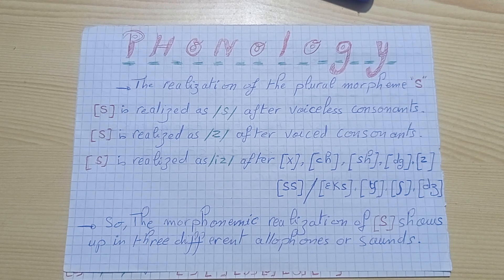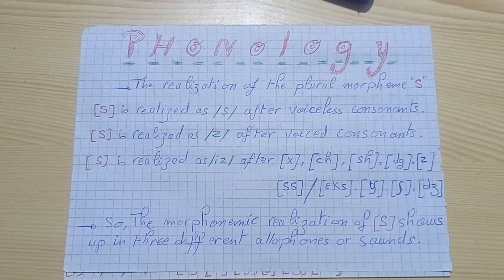And S is realized as /z/ after a voiced consonant. So when we have a word whose last sound is a voiced consonant, the pronunciation of S is realized as /z/. We hear that the S morpheme is pronounced as /z/.